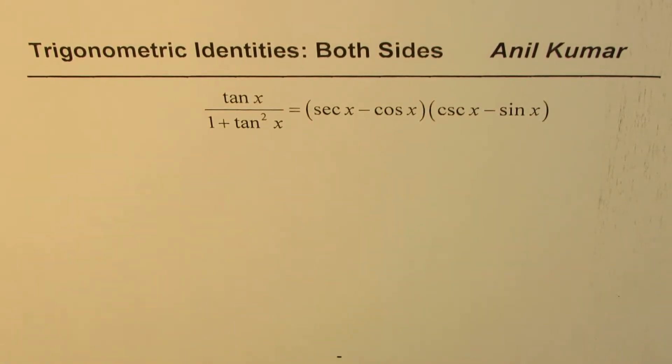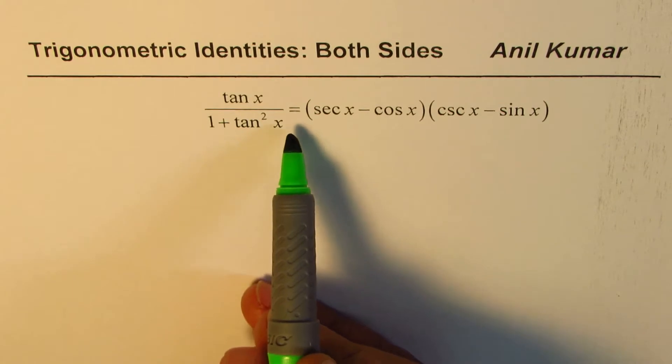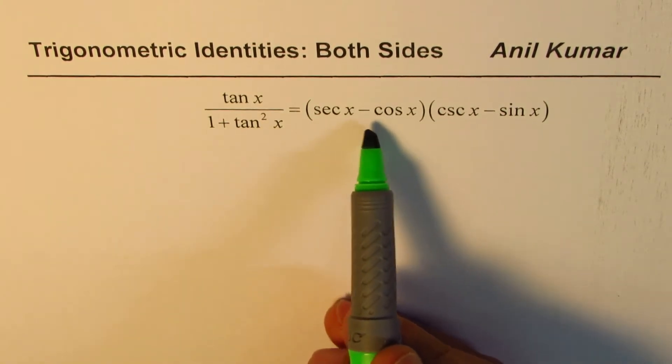I'm Anil Kumar sharing with you another trigonometric identity where I will solve both left side and right side to prove the identity. The question is tan x divided by 1 plus tan square x equal to secant x minus cos x times cosecant x minus sin x.